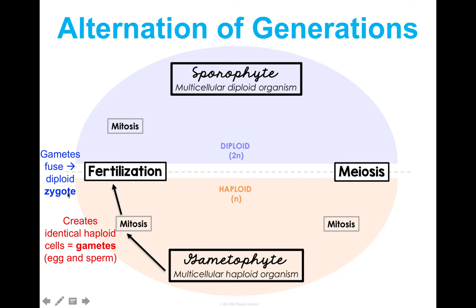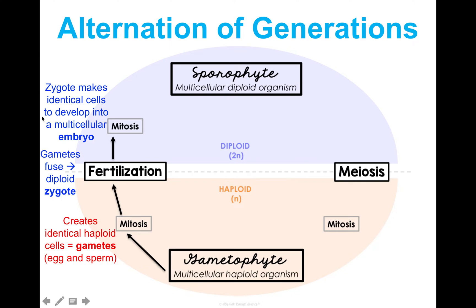When fertilization occurs, an egg and a sperm — those gametes — will fuse. Now I have one set of chromosomes from the egg and one set from the sperm. Those fuse and I now have the diploid zygote.